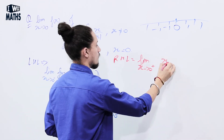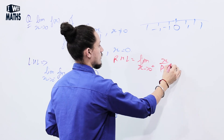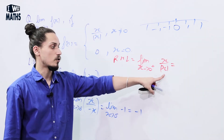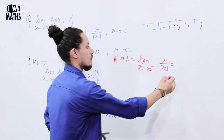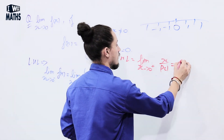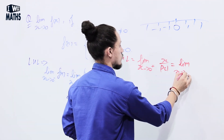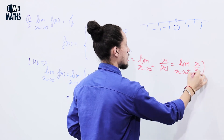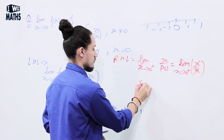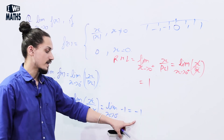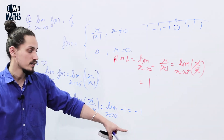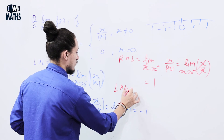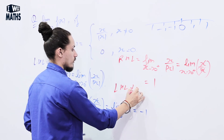For the right hand limit: lim (x → 0⁺) of x / |x|. Since x > 0, |x| = x. So we get lim (x → 0⁺) of x/x = 1. Left hand limit is -1, right hand limit is 1, so left hand limit ≠ right hand limit.